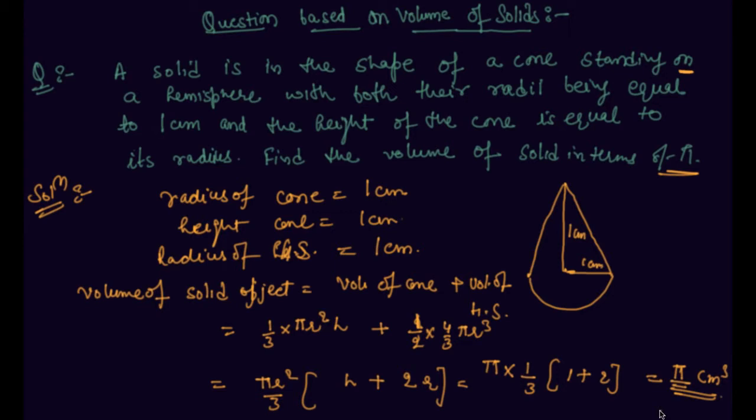After solving the question and dividing it in two parts, volume of solid object will be volume of cone plus volume of hemisphere. And after applying the formula of volume of cone, which is 1/3 π r² h, which I have written over here—it is 1/3 π r² h is the volume of cone—and the volume of hemisphere, either you can write directly as 2/3 π r³.